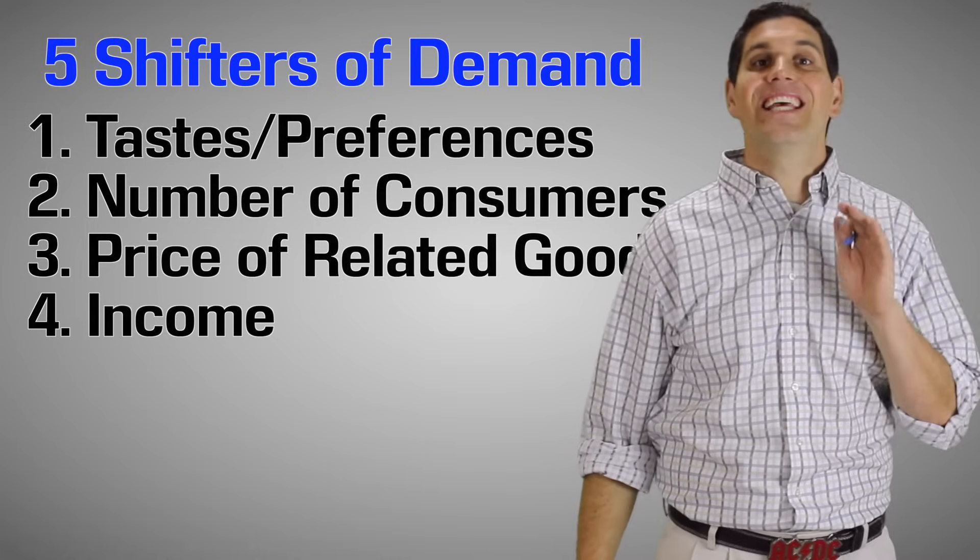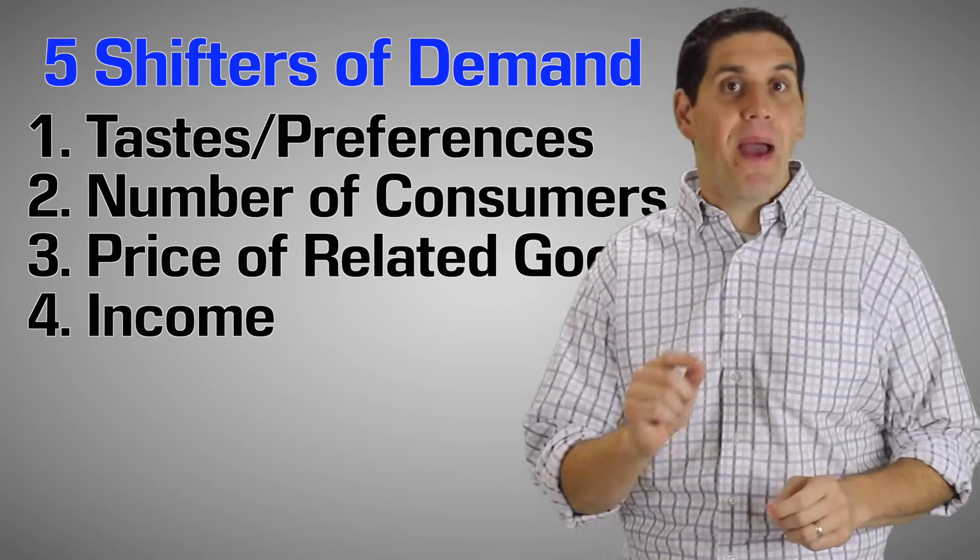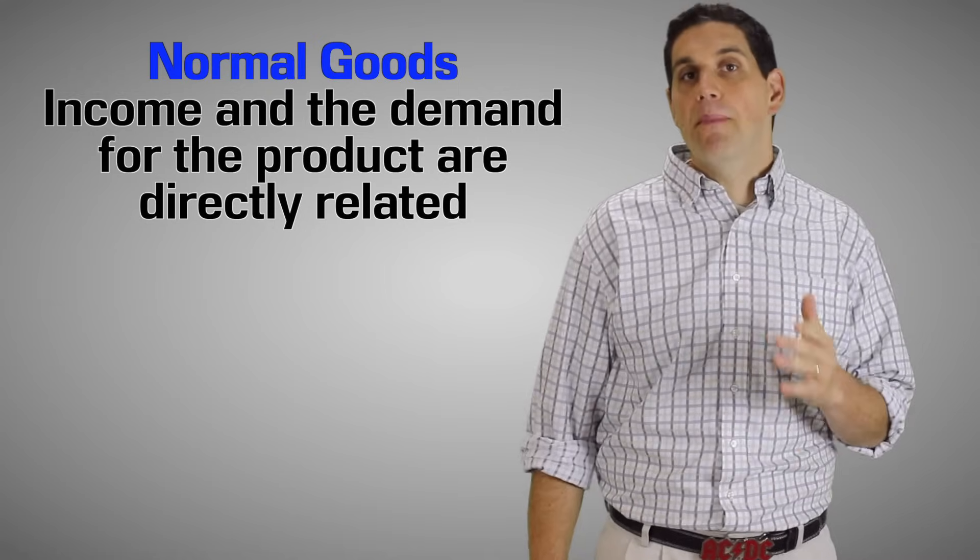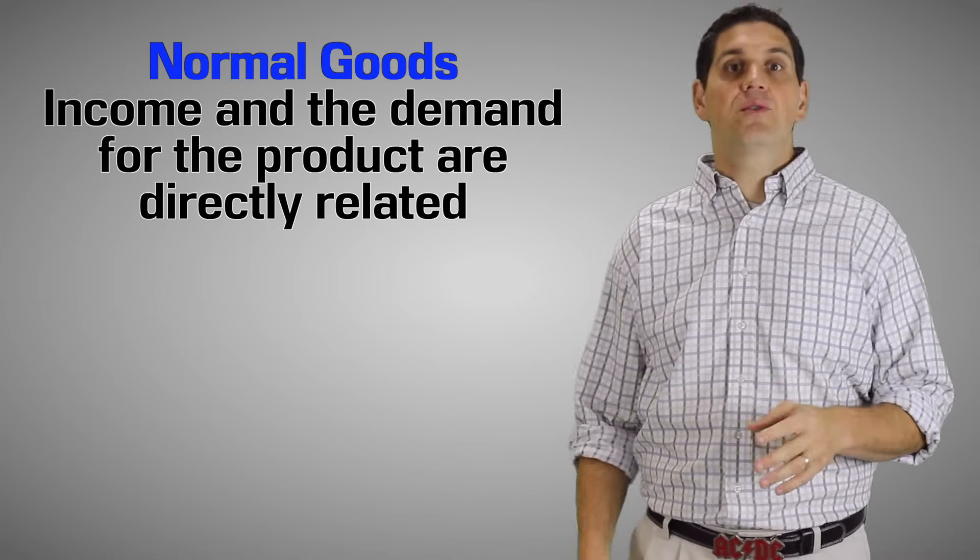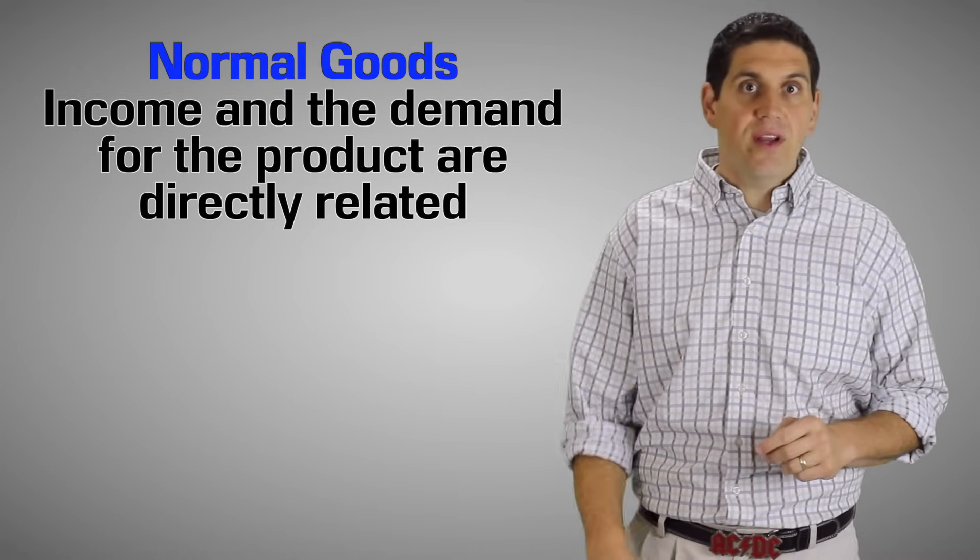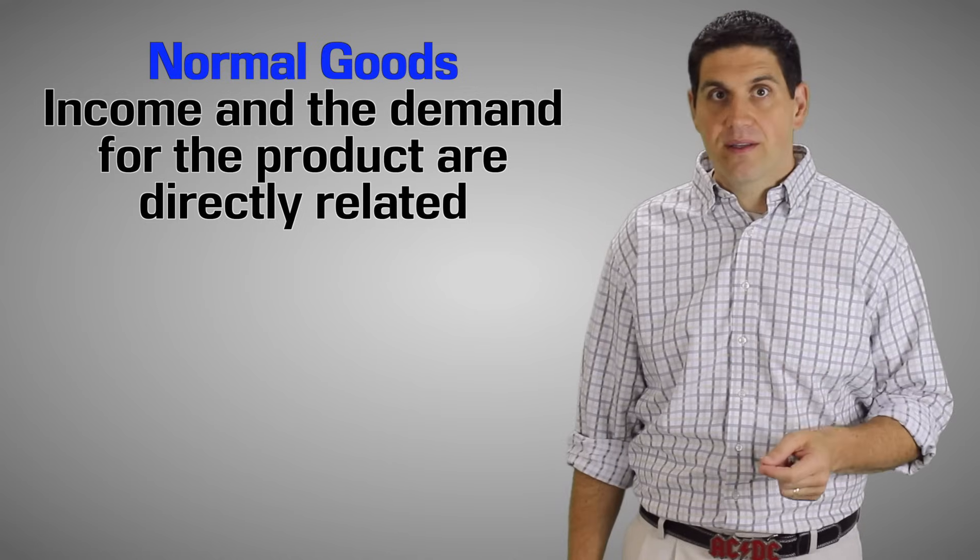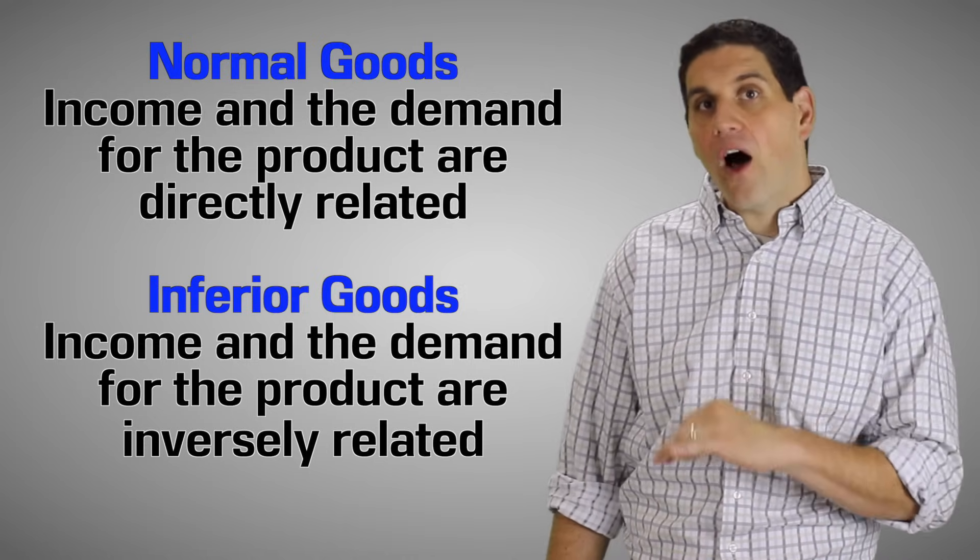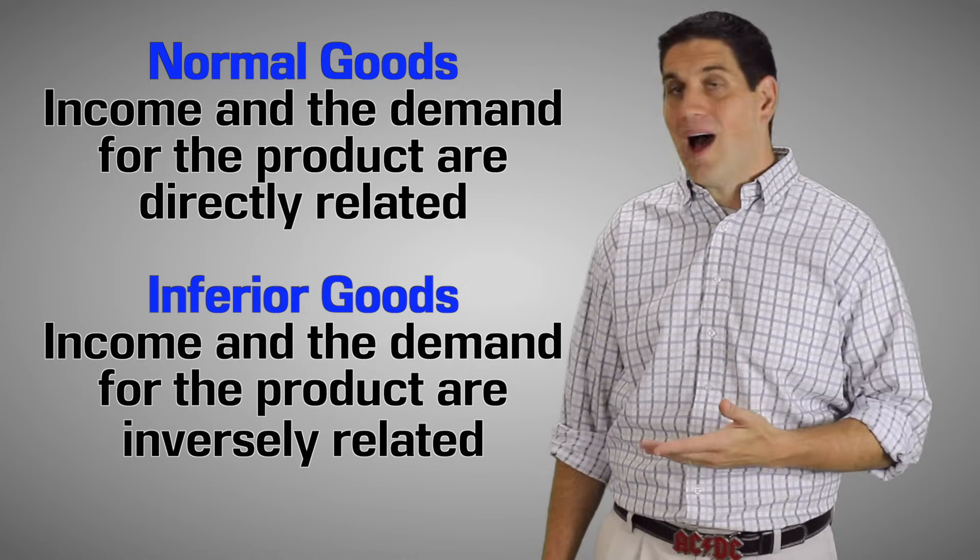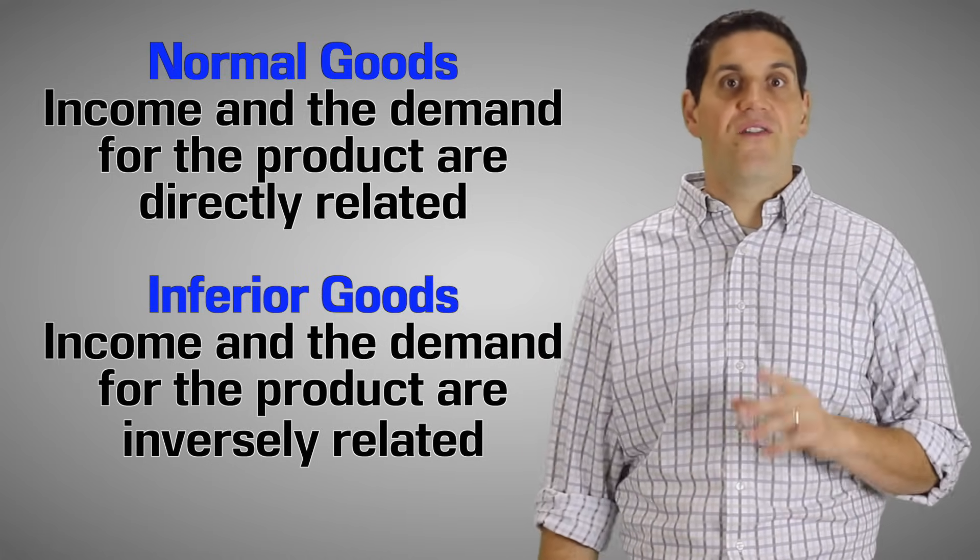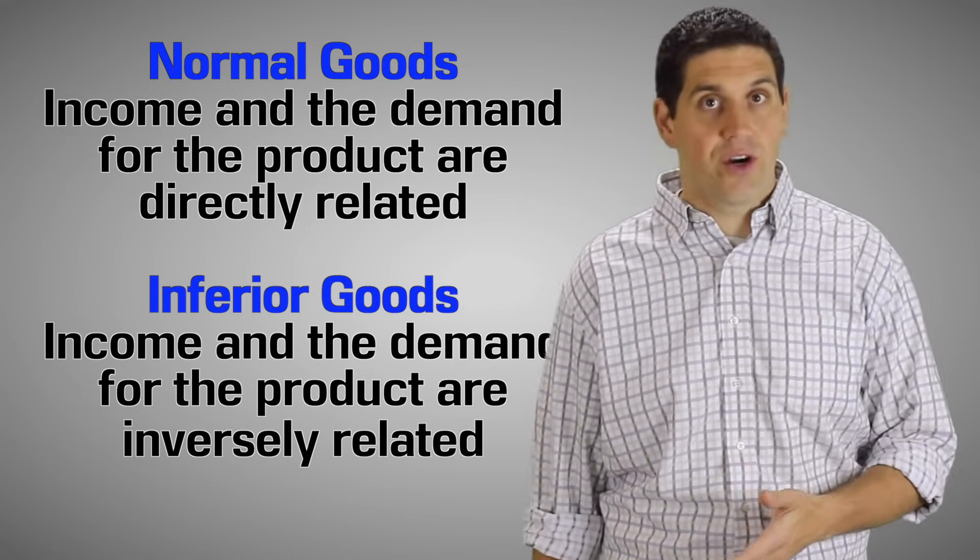Now the next shifter is income. Income is a little tricky because it depends on the type of product. There's normal goods and inferior goods. So let's say that milk was a normal good. This means when there's an increase in income, the demand is going to increase. And when there's a decrease in income, the demand is going to decrease. An inferior good is just the opposite. When there's an increase in incomes, the demand falls. And when there's a decrease in incomes, the demand will go up. So whenever you see a question that involves income, make sure to read the question carefully to find out if it's a normal good or an inferior good.